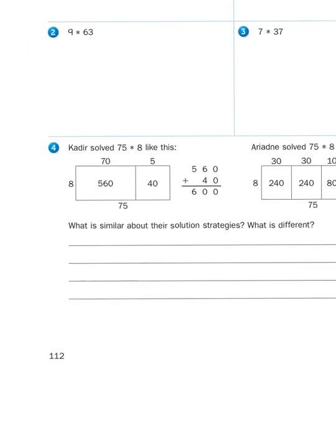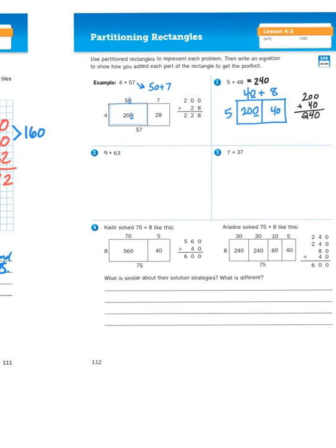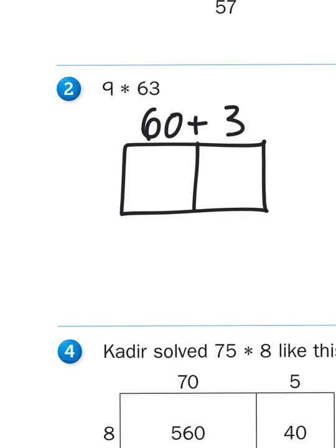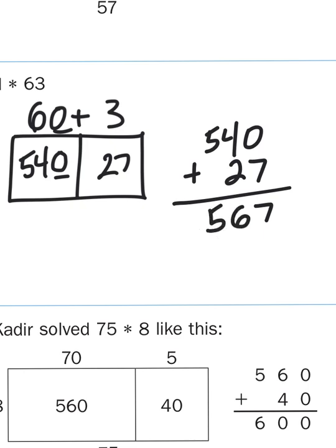Let's try one more. 9 times 63. So 63 is 60 and 3, and I'm going to multiply by 9. Now, I know that 9 times 6 is 54. So 9 times 6 tens is going to give me 54 tens, otherwise known as 540. And I know that 9 times 3 is 27. So now what I do is I just take 540 and I add it to 27, and that's going to give me my total product.